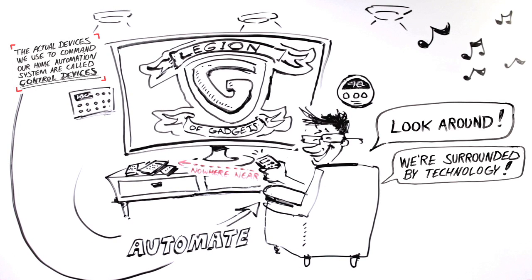The actual devices we use to command our home automation systems are called control devices. Control devices offer many ways to view and interact with the gadgets in our homes.